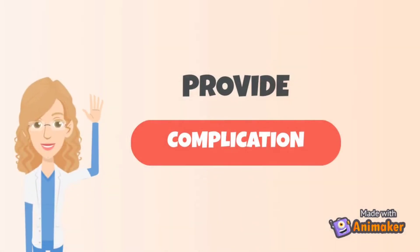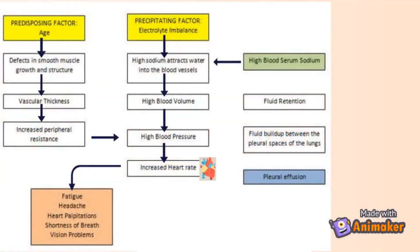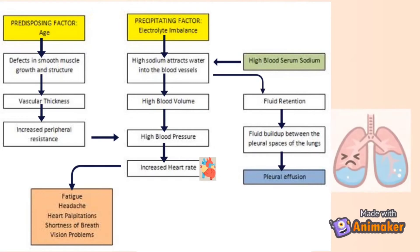Next, provide the complication. For example, high sodium attracts water into the blood vessels, resulting in fluid retention, which can lead to fluid build-up between the pleural spaces of the lungs — or as we call it, pleural effusion.